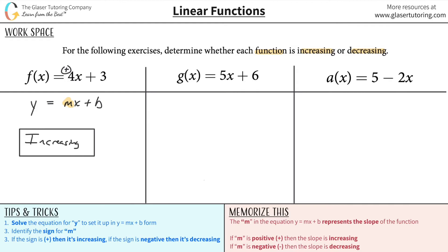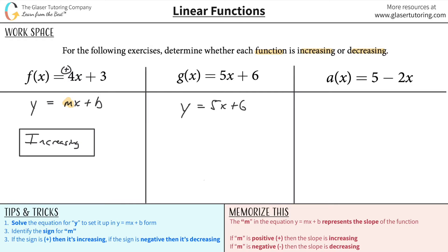Now watch how fast we can do the rest. Here's my function — I hate this notation, so I'm just going to call it y. y is equal to 5x plus 6. Now I say, is this thing solved for y? Yes, it is. Does this thing match my mx plus b form? It looks like it matches it perfectly. So I identify the slope, which is this value right here, and then I just ask myself: what's the sign? It's not written in, so it's positive — therefore it's increasing.